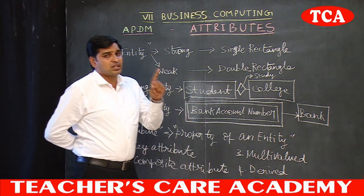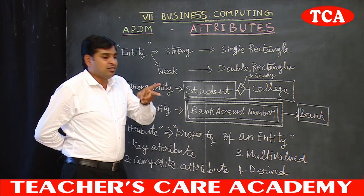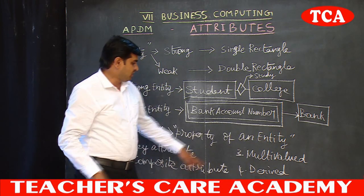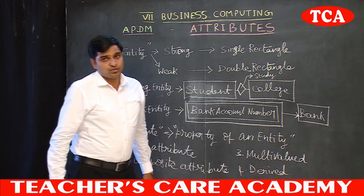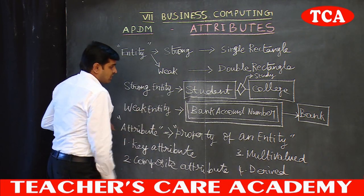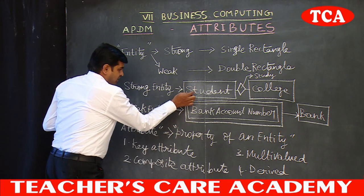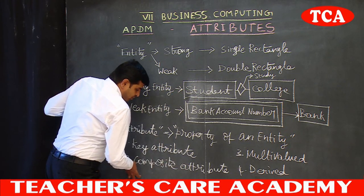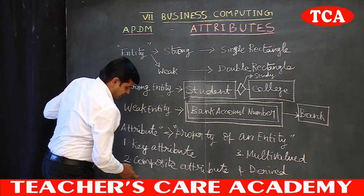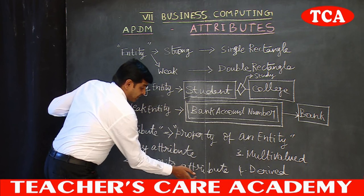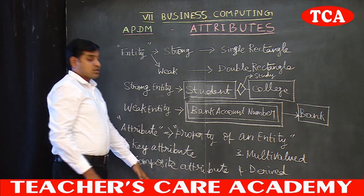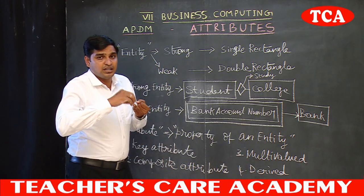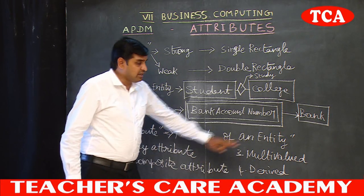Multi-valued attributes: for example, a phone number — a student can have one phone number or two phone numbers. Phone number one, phone number two — that is called multi-valued attributes. So to recap: first, key attributes — one student has one roll number or registration number. Composite attributes — address is made of door number, flat number, and pin code. Multi-valued attributes — two or more values for the same attribute.